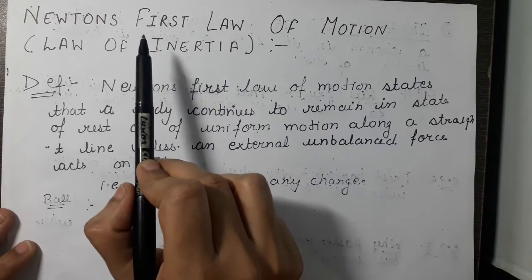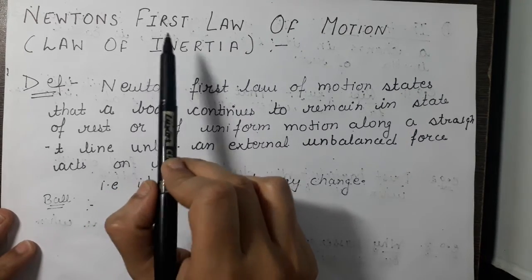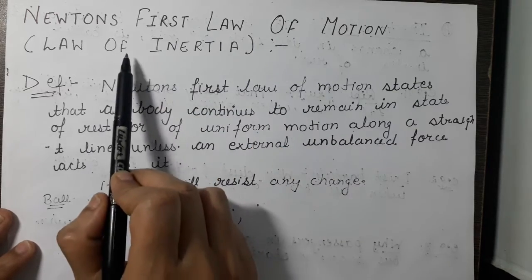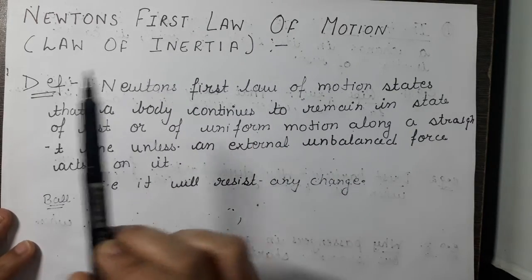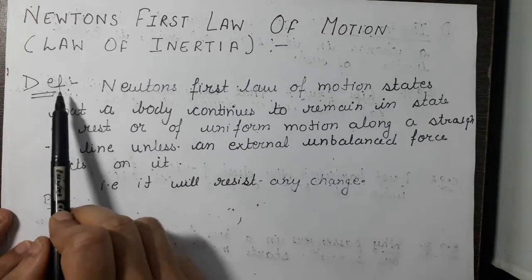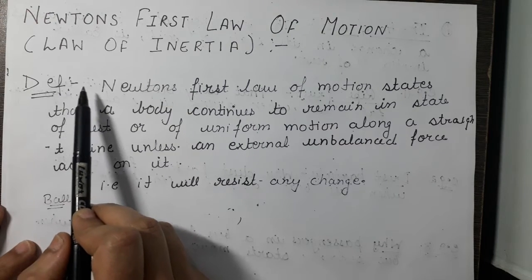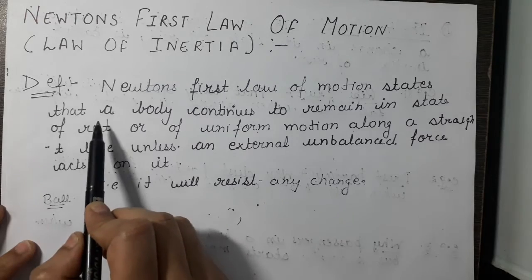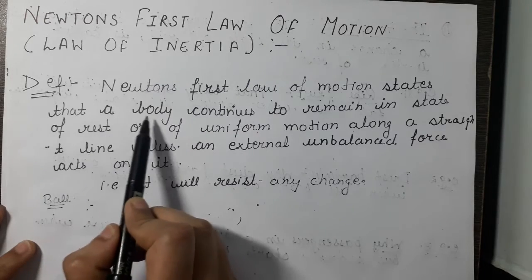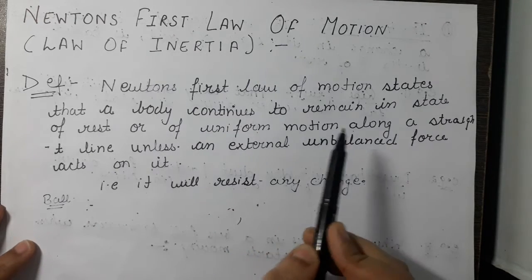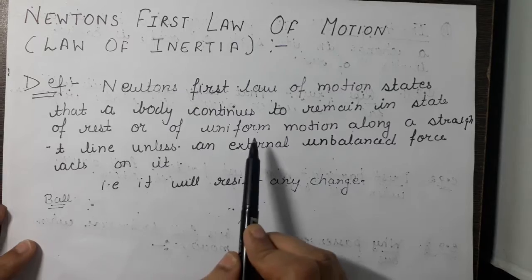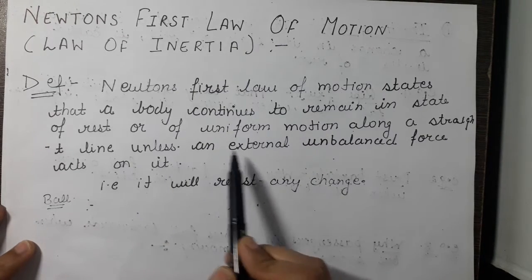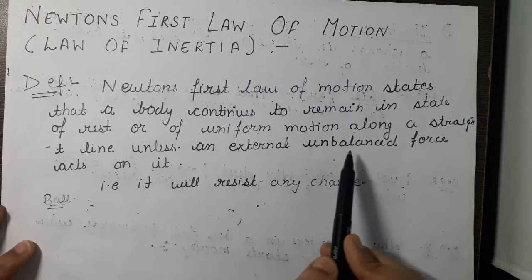Hello students, our today's topic is Newton's first law of motion, which is also known as the law of inertia. Newton's first law of motion states that a body continues to remain in a state of rest or of uniform motion along a straight line unless an external unbalanced force acts on it.